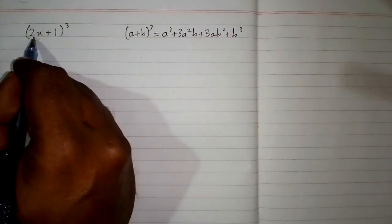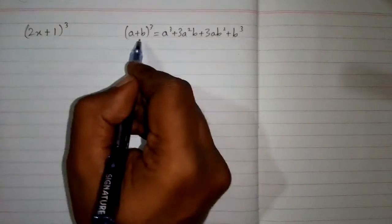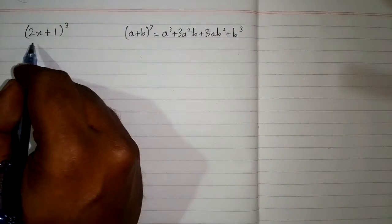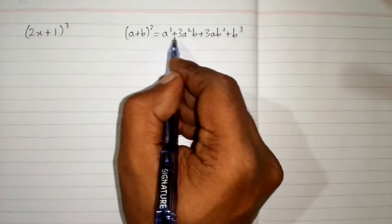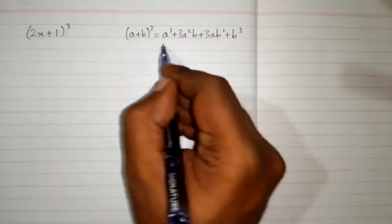So we can see that we have 2x in place of a and 1 in place of b. So we will put these values in the respective places of a and b in this formula.